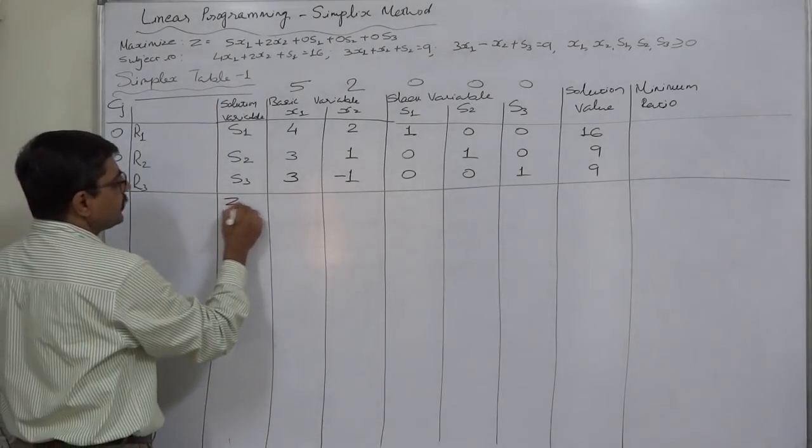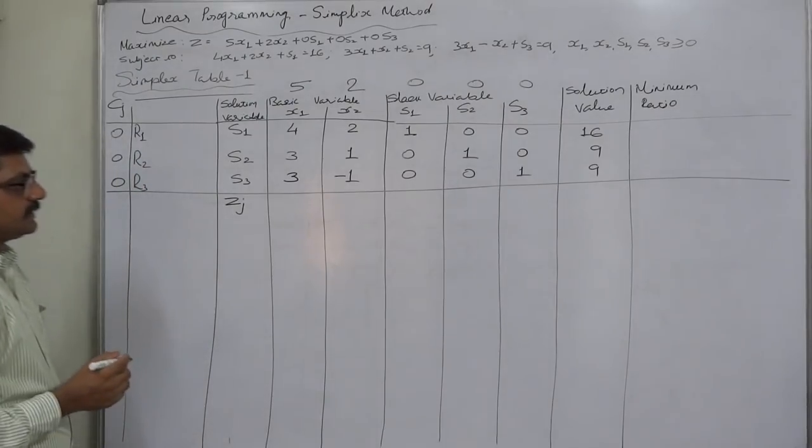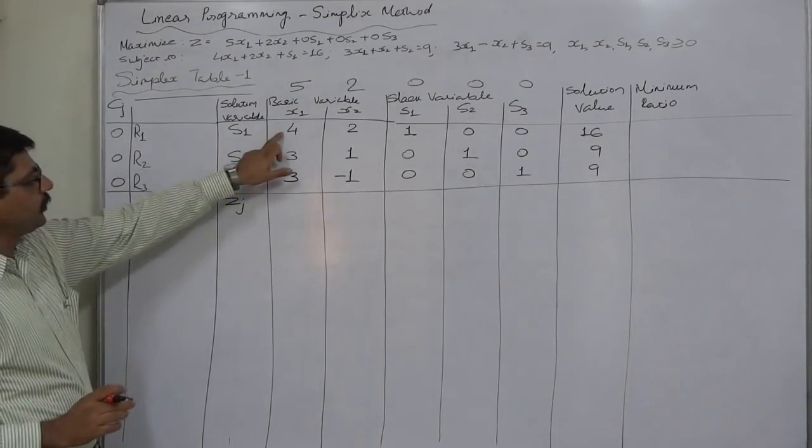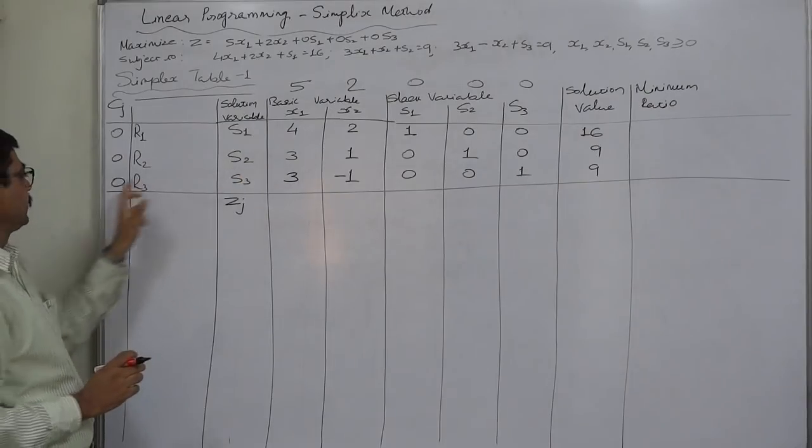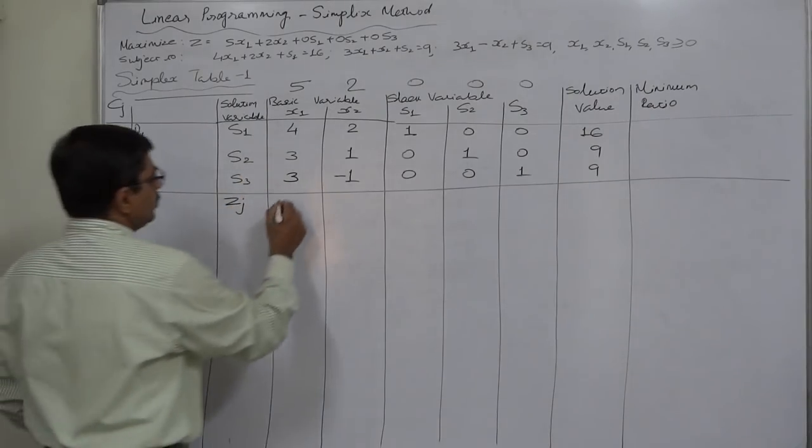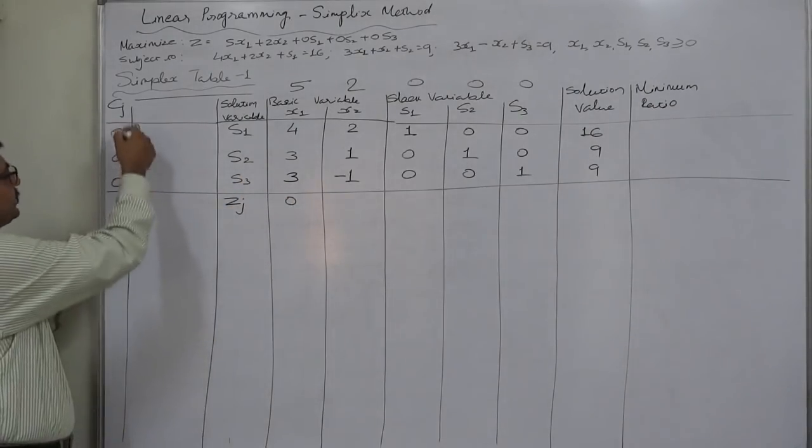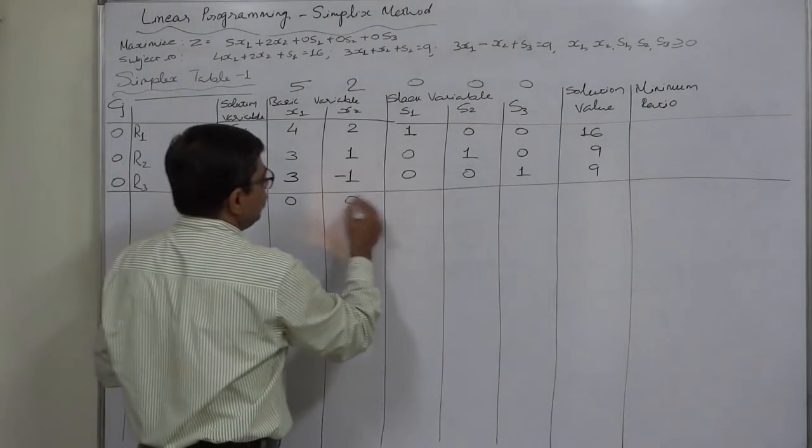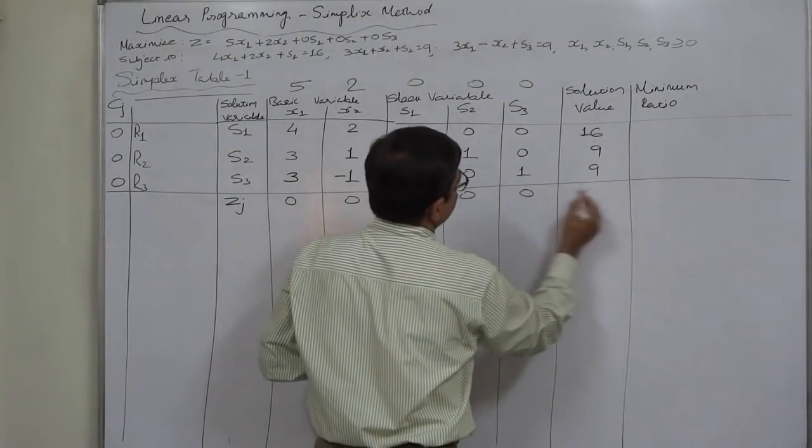Now we can determine the value of ZJ. 0 into 4 is 0, 0 into 3 is 0. Since we have all these three zeros all Z values will be 0 here.